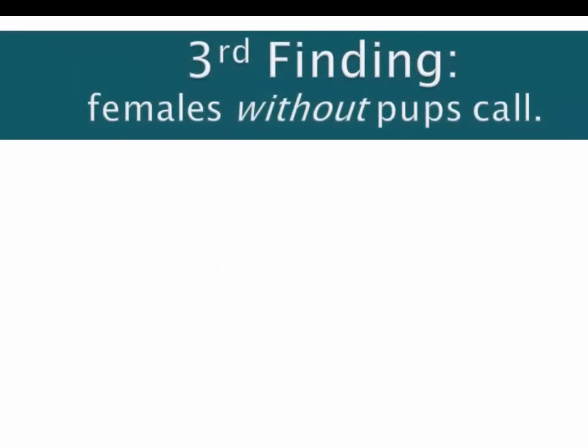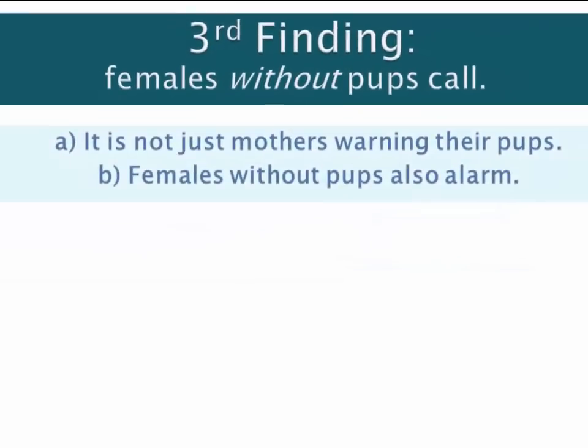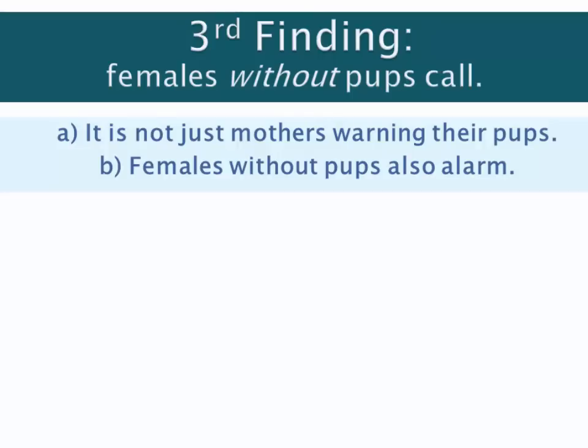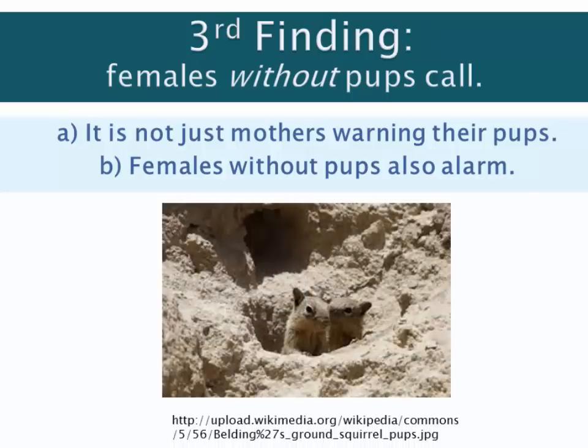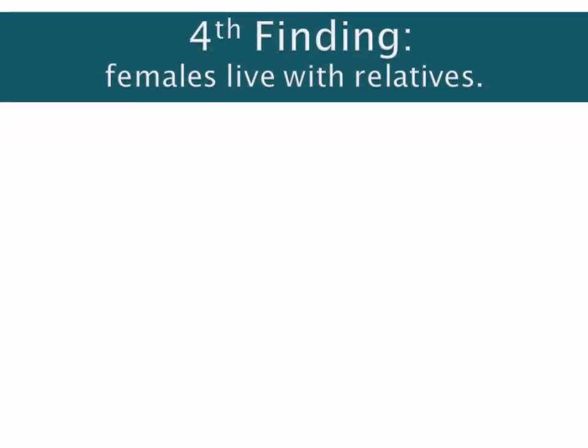His third finding was that even females without pups call more often than males — this would be the yearlings. So it's not simply mothers protecting their own pups, which would be direct fitness. It turns out females risk their lives even when they have no pups to save, in order to save the pups of others. This raises the question: what is their connection with those pups who aren't their offspring?